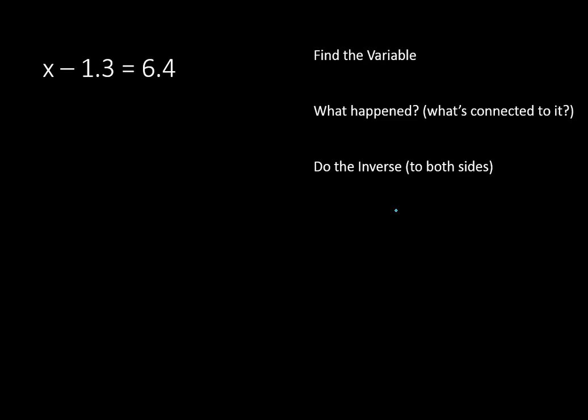Here are the steps that you should follow. First, you're going to find the variable x. What happened to the variable or what is connected to it? We are subtracting 1.3, so we're going to do the inverse or the opposite, which is to add 1.3. We have to do that to both sides of the equation to keep it nice and balanced.